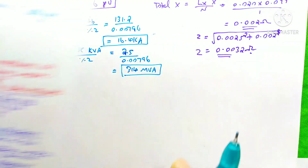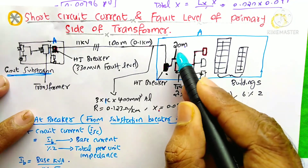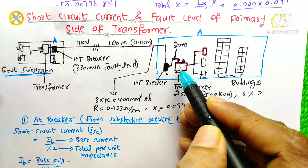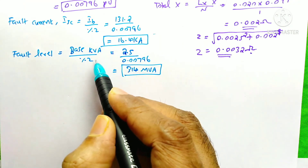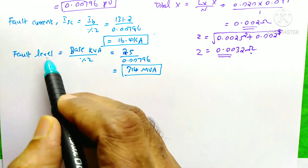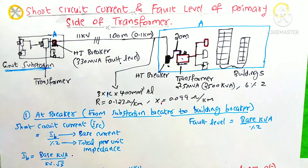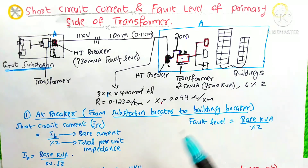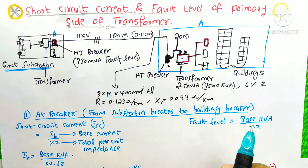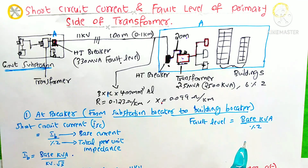The values decreased because after the HD breaker, the 20-meter cable length was added. Due to this cable inclusion, the per unit impedance increased. Whenever the per unit impedance increases, both the fault level and the fault current decrease. I hope you understand these calculations well. If so, please like and share this video. Subscribe to this channel and press the bell icon for more informative videos. Thanks for watching.